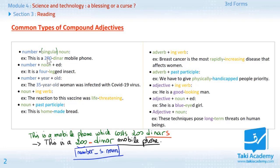Let's move to the second one. Number plus noun plus ed. Example. It is a four-legged insect. Notice that when we say number, you can write it in letters, like here, four. Or in numbers like here, two hundred or thirty-five in the next example. It is a four-legged insect. Four is the number. Leg is the noun. And here you add the ed. Here you have doubling the consonant. It's an exception.